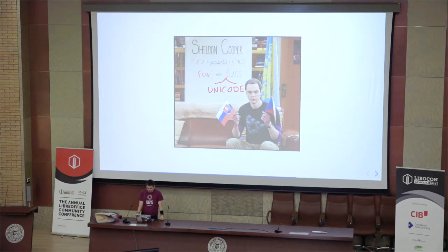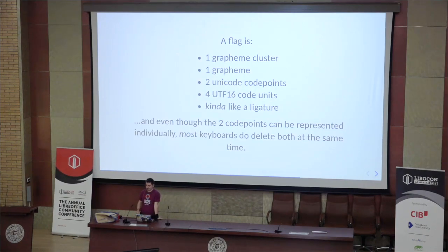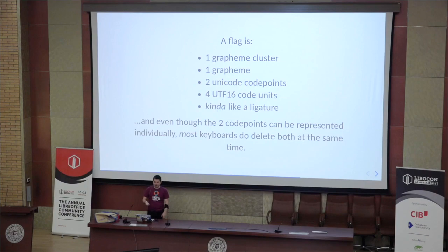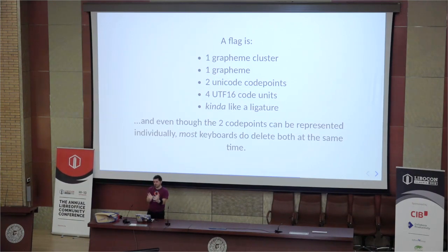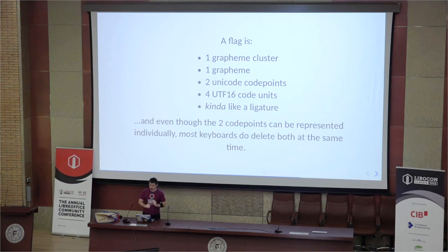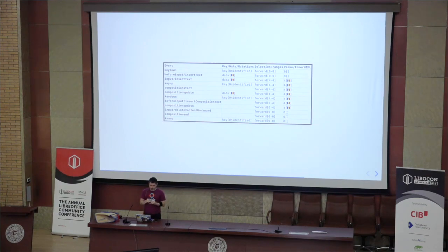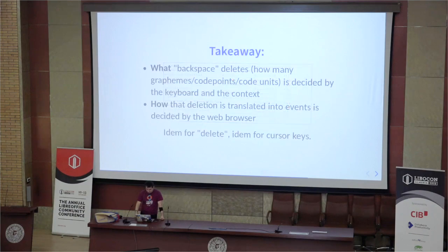Flags are fun in Unicode. A flag is one grapheme cluster, two Unicode code points, four UTF-16 code units, and behaves like a ligature. When you delete it, you're deleting two code points together. A flag is actually two letters in a specific space of the Unicode code point scheme — a two-letter country code corresponding to ISO 3166. When two characters correspond to a flag, the rendering engine turns them into one grapheme forming one grapheme cluster. For Andorra, it's two code points — one for A and one for D — each using two UTF-16 code units. When you delete, you delete four units, two code points, the whole flag. What Backspace deletes is decided by the keyboard, the context, and the browser. The same applies for forward delete and cursor keys.